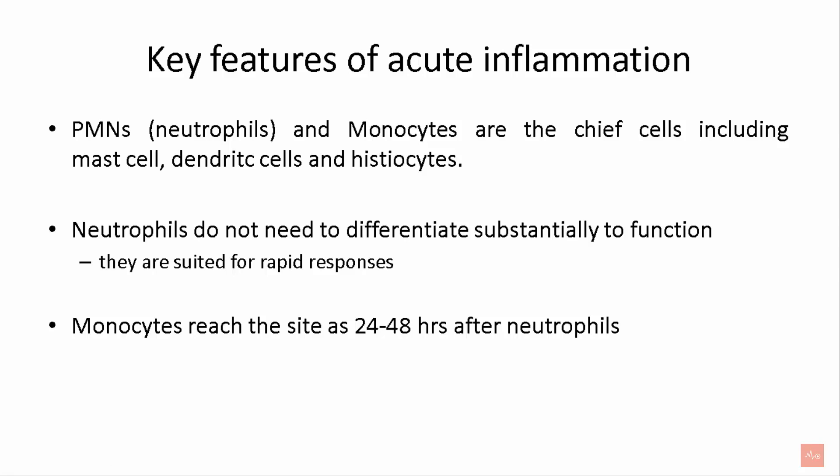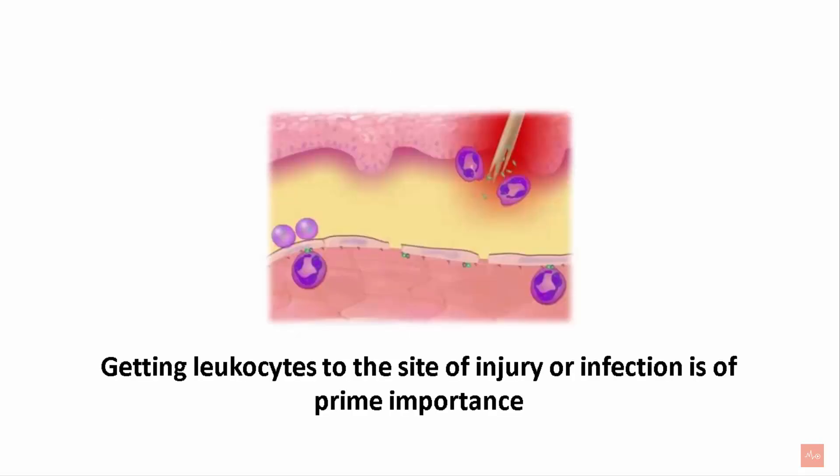Monocytes, however, reach the site 24 to 48 hours after neutrophils, because they come out of the blood vessel and mature to become macrophages. Getting leukocytes to the site of injury or infection is of prime importance in inflammation.